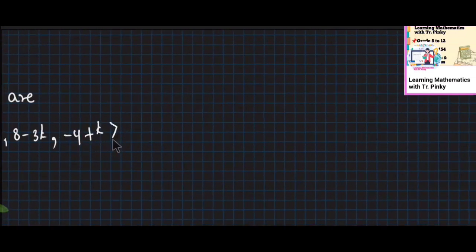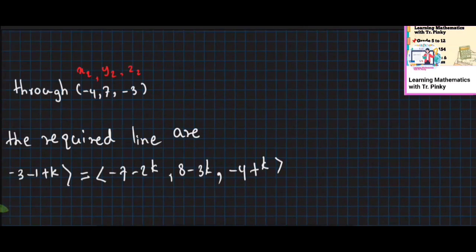As you can see here, we have: minus 7, minus 2, minus 3, minus 4, plus 1.